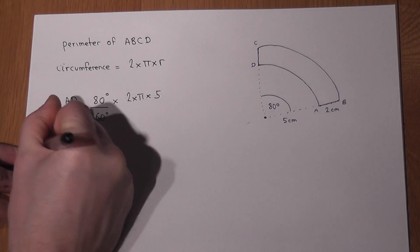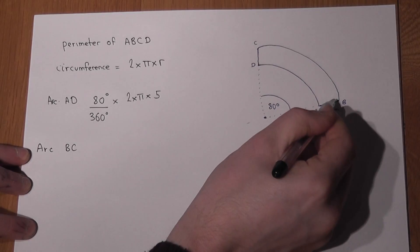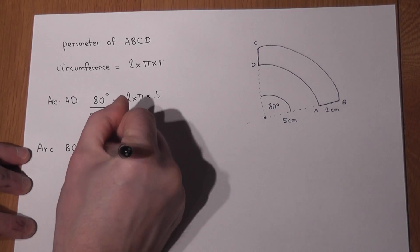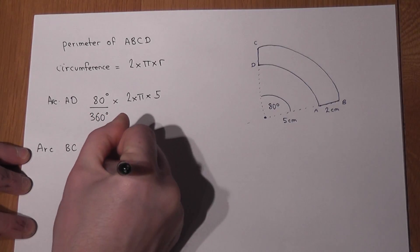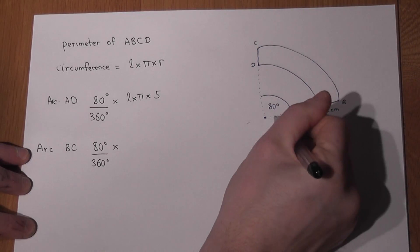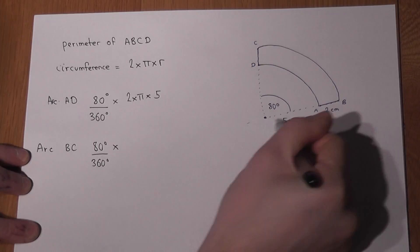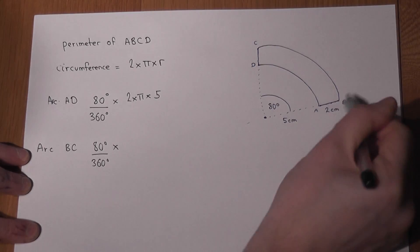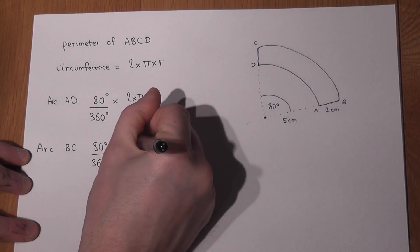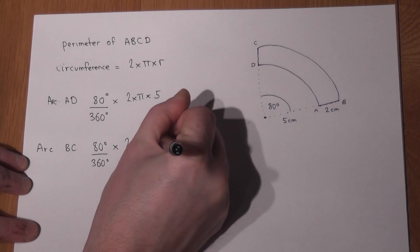Then for the arc BC. Now this is a larger length, but it's still a fraction of a full circle. The key difference being here is that rather than having a radius of 5 from the centre, it's not 2, it's actually a full radius of 7. So from the centre to B is 7cm. So 2 times pi times 7.